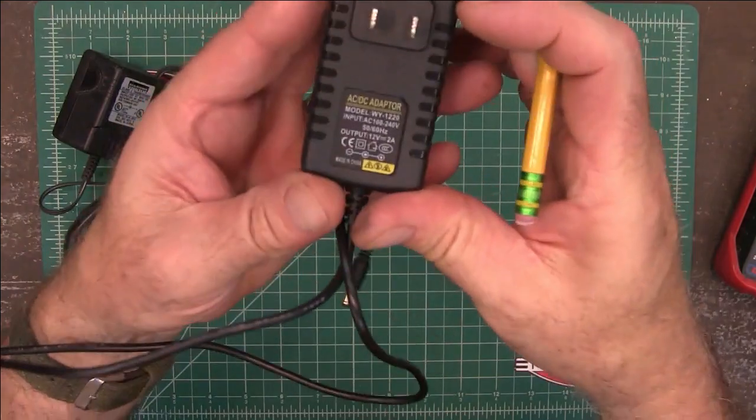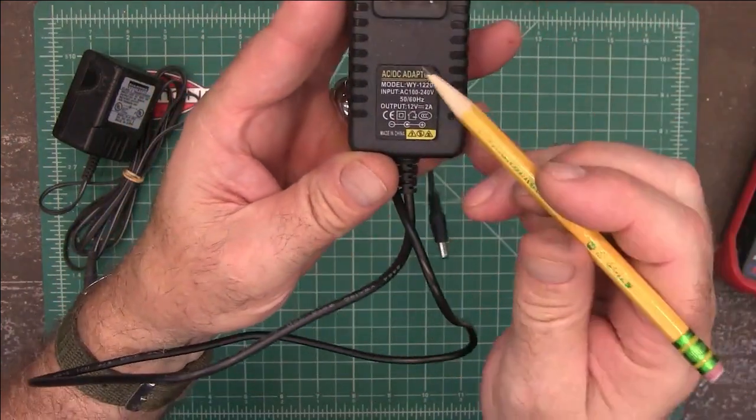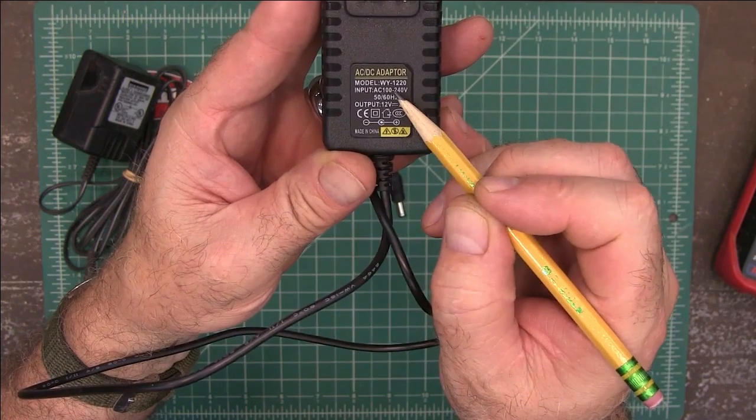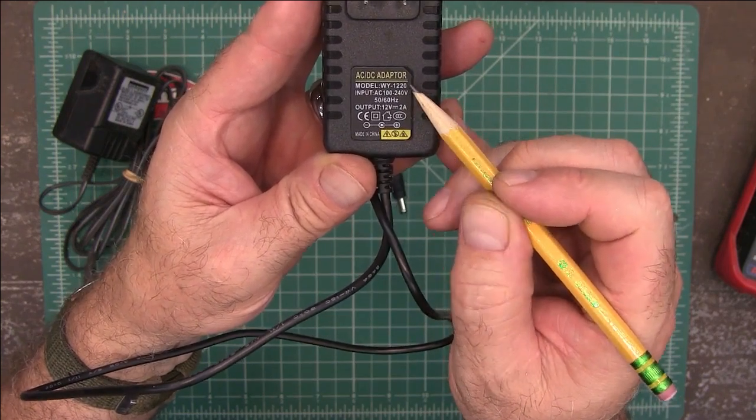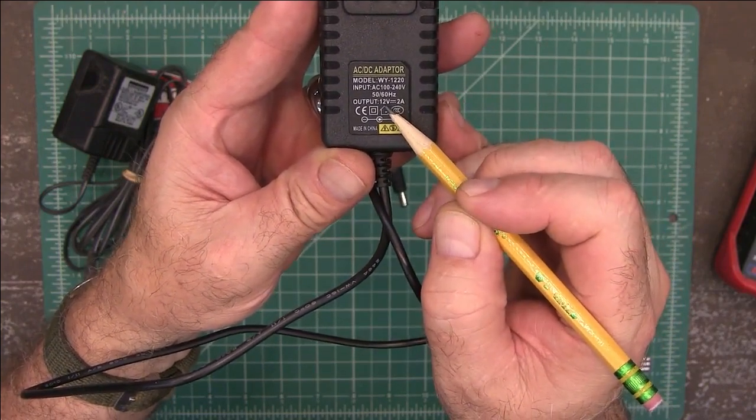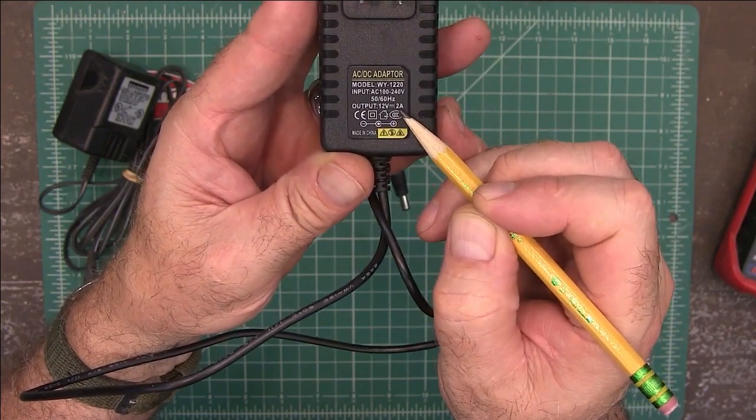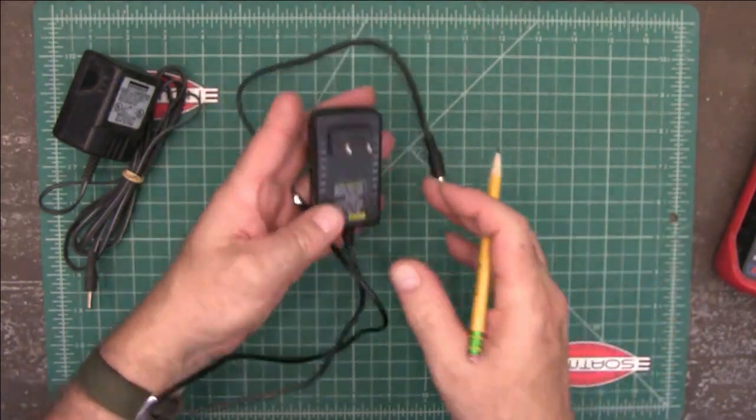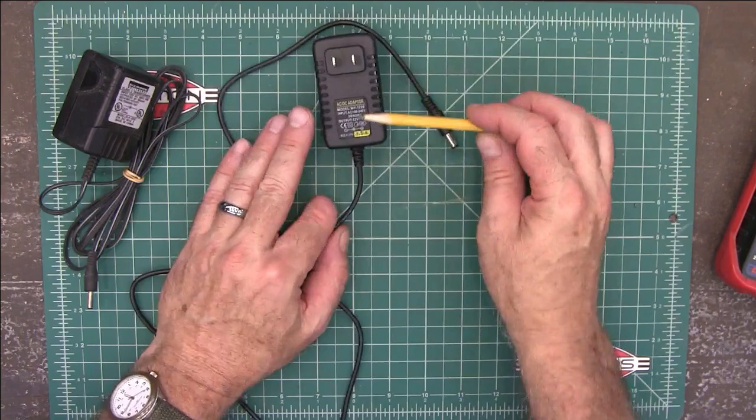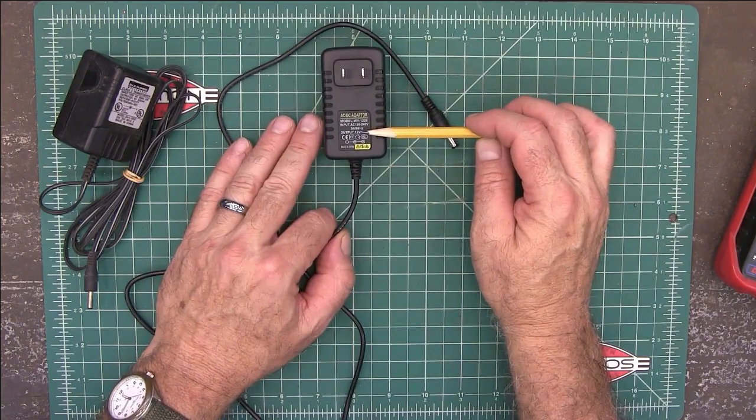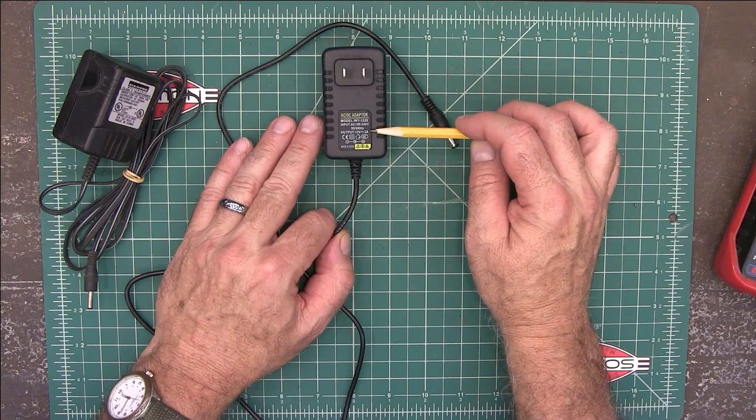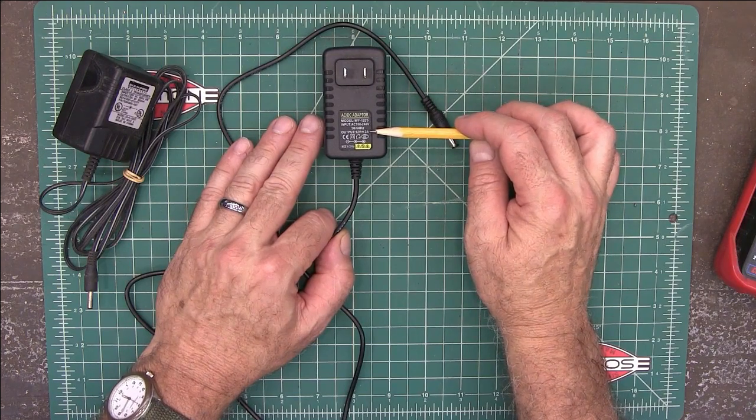If we look at this one, it says that the input is anywhere from 100 to 240 volts. So it's really very simple, you just need to make sure that it's the right voltage, and then that the amperage is high enough to cover whatever it is that you're trying to power.